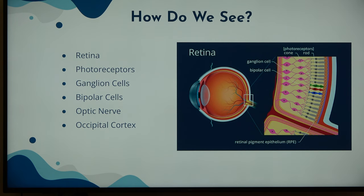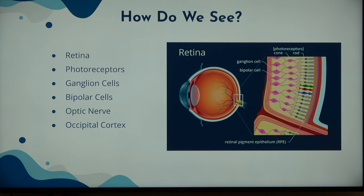Then there are ganglion cells, which are present on the surface of our retina and help pass the electrical signal down the neural pathway. There are also bipolar cells, present in the middle layer of the retina, which pass the electrical impulse from the photoreceptors to those ganglion cells. The optic nerve sends all this visual information to our occipital lobe, and the occipital cortex is where all this visual information actually gets processed — that's how it gets interpreted and how we see.